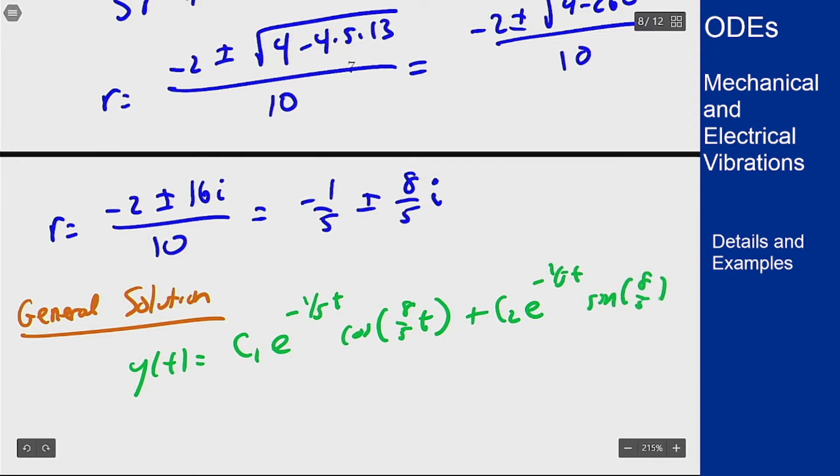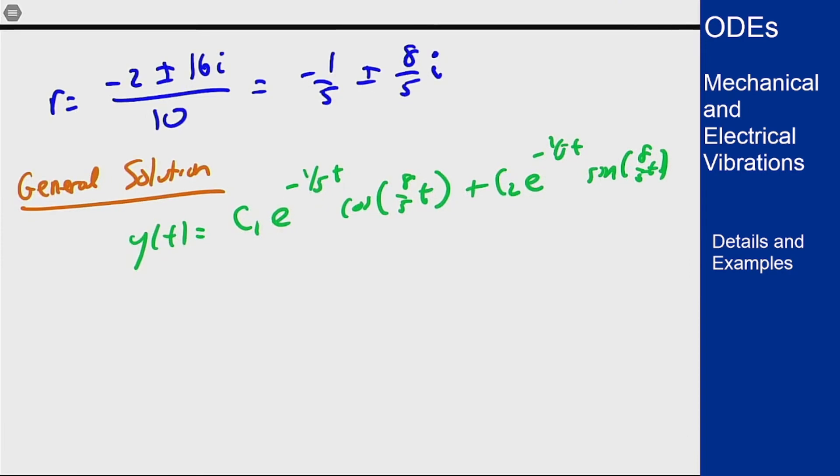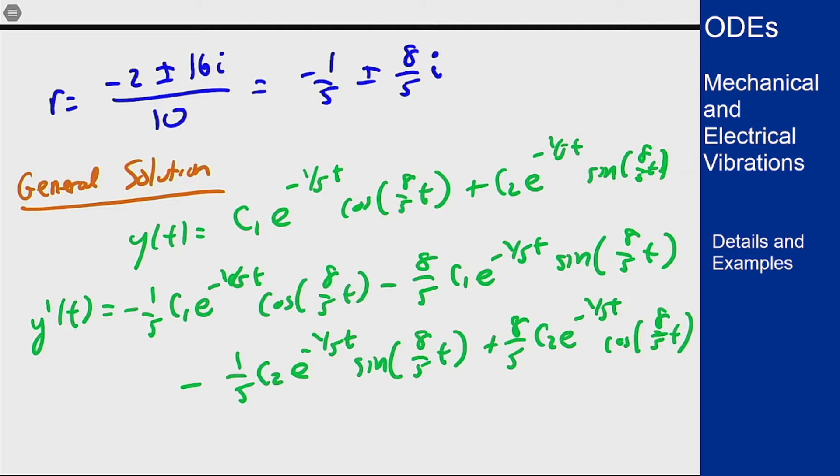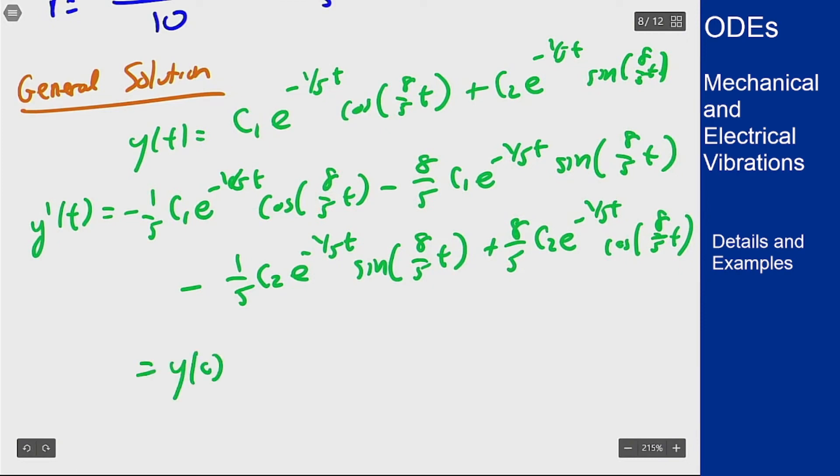And now we can use this to work with our initial conditions. We need something for y of 0 and something for y prime at 0. I can work with y prime first and write out the formula here using two applications of the product rule. The y of 0 we're assuming is 0.05 and if I plug in 0 for t here the sine term goes away because that goes to 0. This goes to 1, this goes to 1, so I'm just left with c1 here. Fantastic.